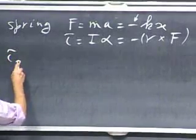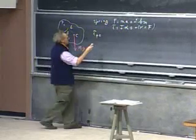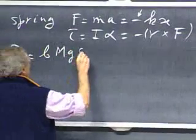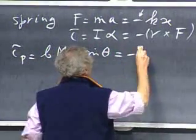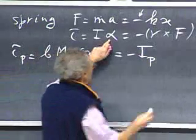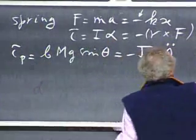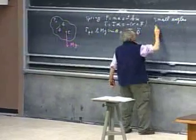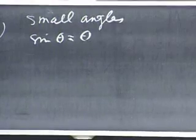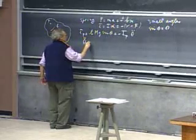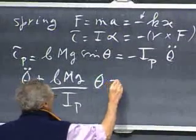Taking the torque relative to point P: the position vector has magnitude b, the force is mg, and we multiply by sine of theta. So we have b·mg·sin(theta) equals minus I_P times alpha, where alpha is theta double dot. Bringing them together and using the small-angle approximation — sine(theta) ≈ theta for small theta in radians — we get theta-double-dot plus (b·m·g / I_P)·theta = 0.